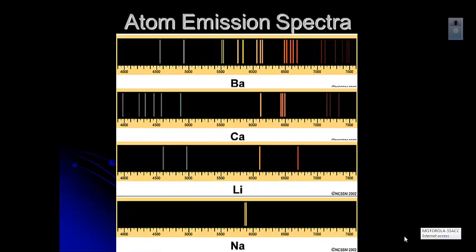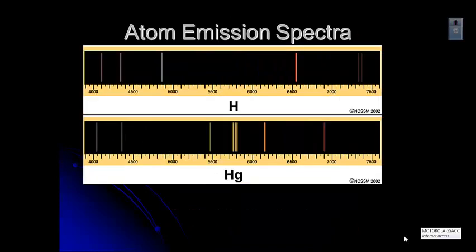There are different atomic emission spectra for every different element. And you can see the top one is barium. It has a number of lines. Calcium has different lines than barium. It's a way that you can identify things. Lithium has four very specific lines. Sodium has two lines that are very close together that give sodium, in a flame, its very characteristic orange color. And then these are just a couple of more examples. And as you do these activities, you'll get to see some of these spectra yourselves.